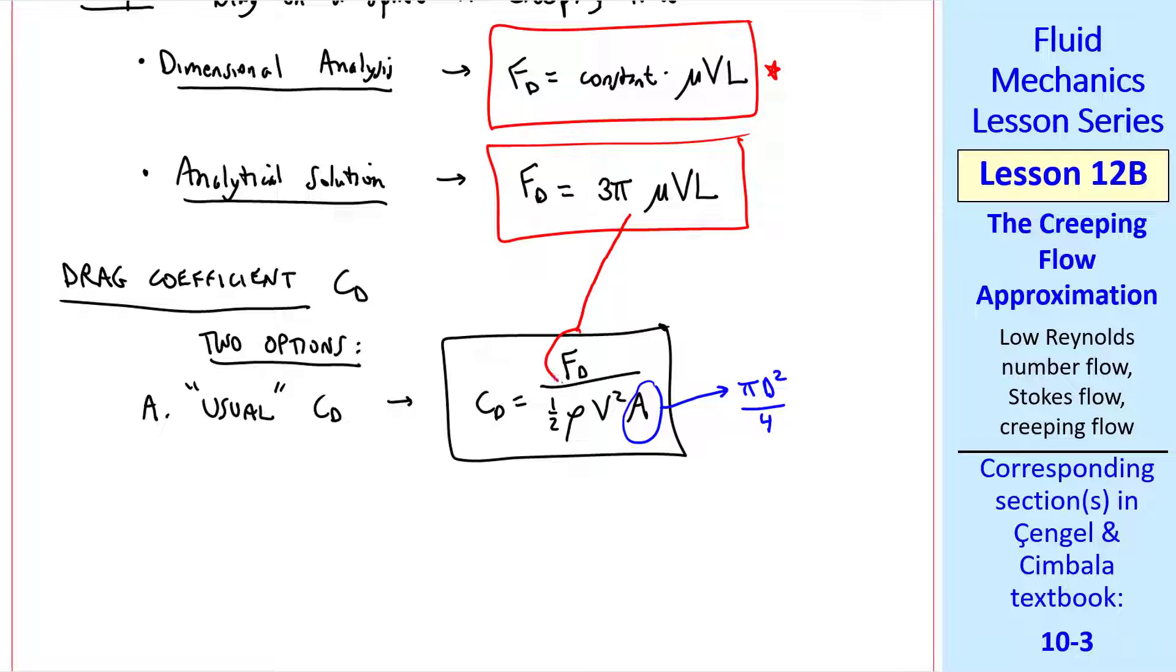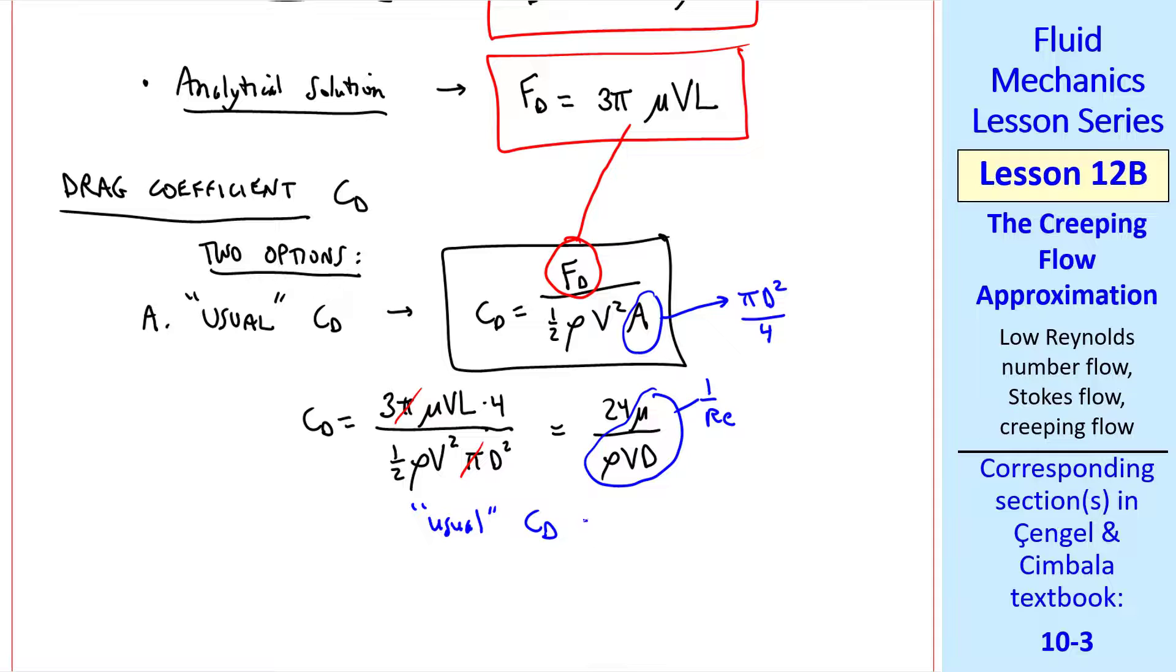We now plug this equation into this FD term and we plug in A and do a little algebra. We get 24 mu over rho VD. We recognize this is 1 over Reynolds number. So the usual CD for a sphere is 24 over the Reynolds number.